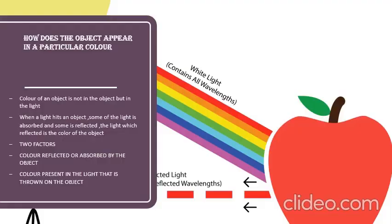Next topic: how does an object appear in a particular color? If you are going to wear a black shirt, or a shirt which consists of red and blue, how does that appear? Now just look at this particular diagram. White light falls on it, and your white light consists of seven colors. Those seven colors have been shown here — your white light consists of seven colors: violet, indigo, blue, green, yellow, orange, and red.